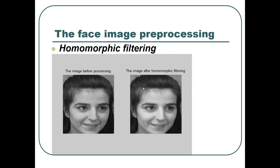The fourth method is homomorphic filtering. This method transforms the brightness model from product form into additive form, in order to achieve filtering enhancement. The light intensity of the image and the intensity of reflected light will be changed. So we are able to reduce the dynamic range of the image and enhance the contrast ratio at the same time. Through analyzing this figure, we know that the contrast ratio is improved and several dark areas become clearer.